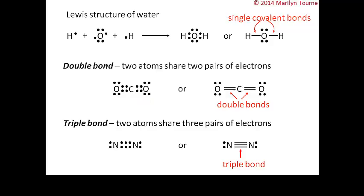So to summarize bond types: a single bond involves one shared pair of electrons, a double bond involves two shared pairs, and a triple bond involves three shared pairs of electrons.